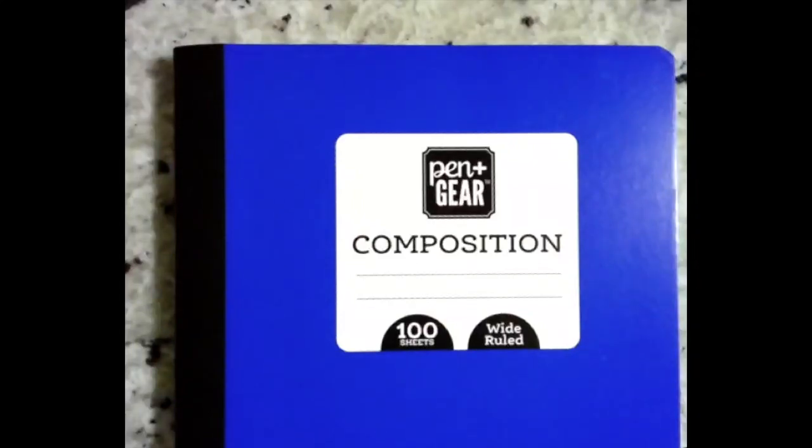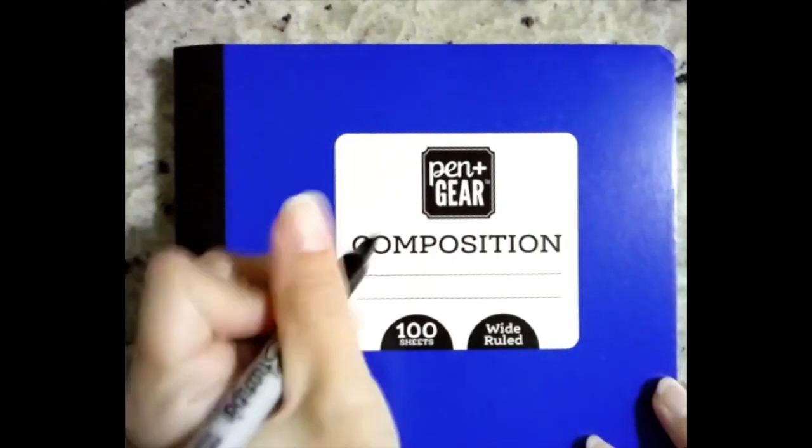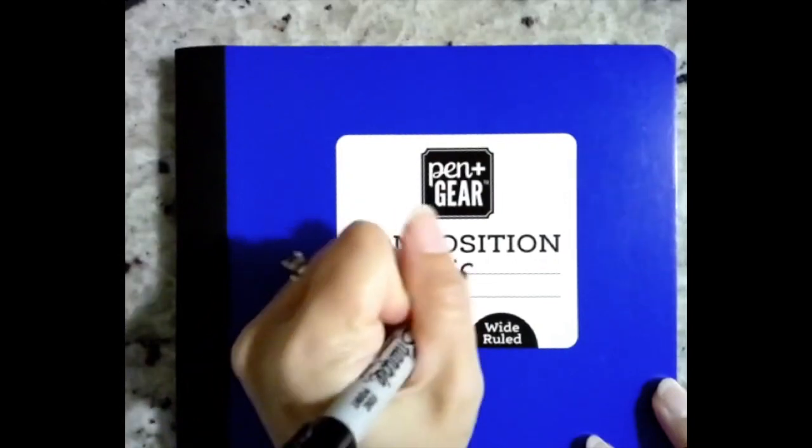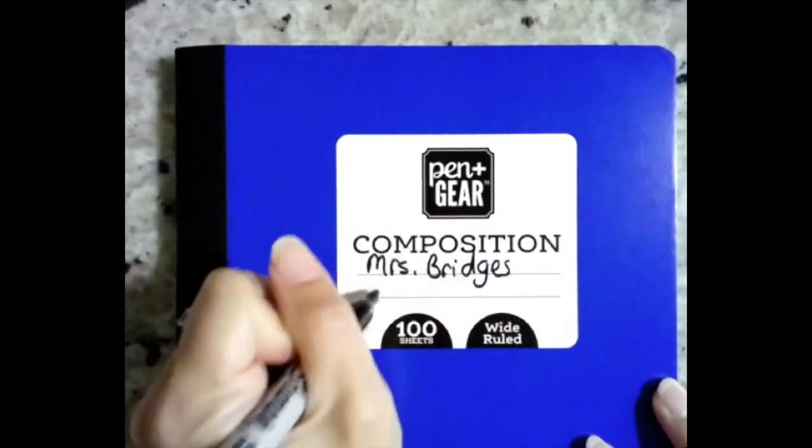All right, boys and girls, we're going to take some notes today in our math journal. You should have four composition books at home. You can pick any one that you want, totally up to you. I picked the color blue. I like to associate blue with math. And you're going to write your name on the outside of it. And you're going to write math journal.